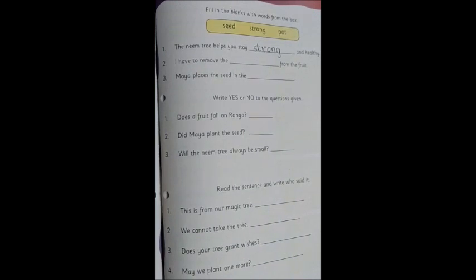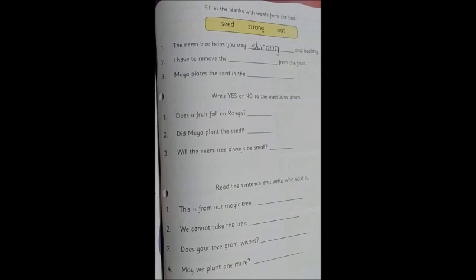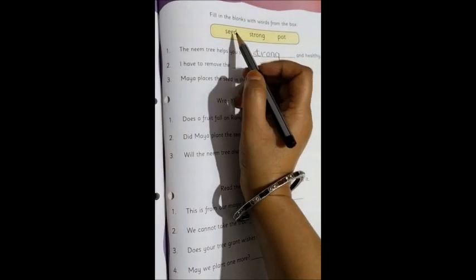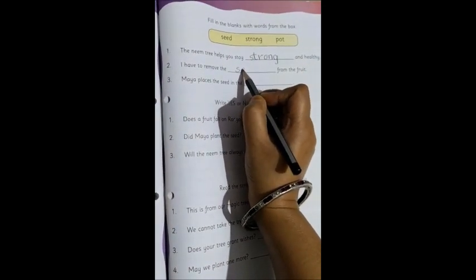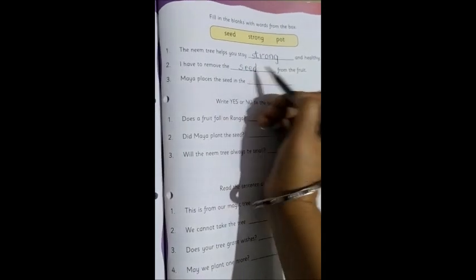Moving on to the next one. I have to remove the dash from the fruit. So what do you remove from the fruit? The seed. Yes, so we will write the next first word. That is seed. S-E-E-D. Seed.